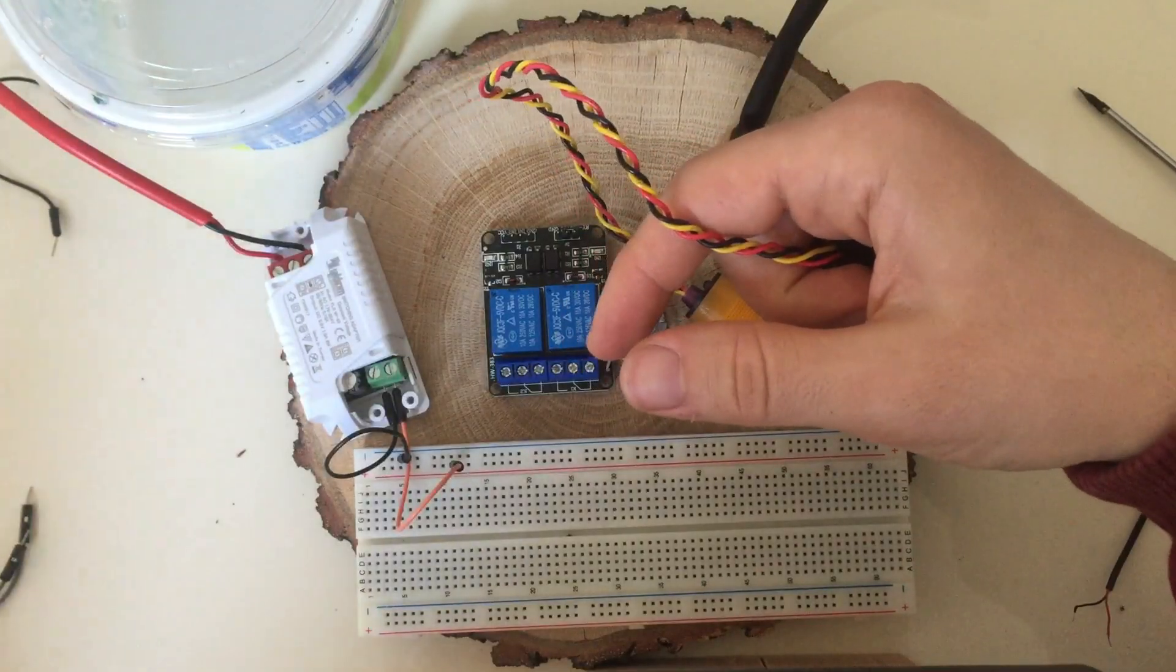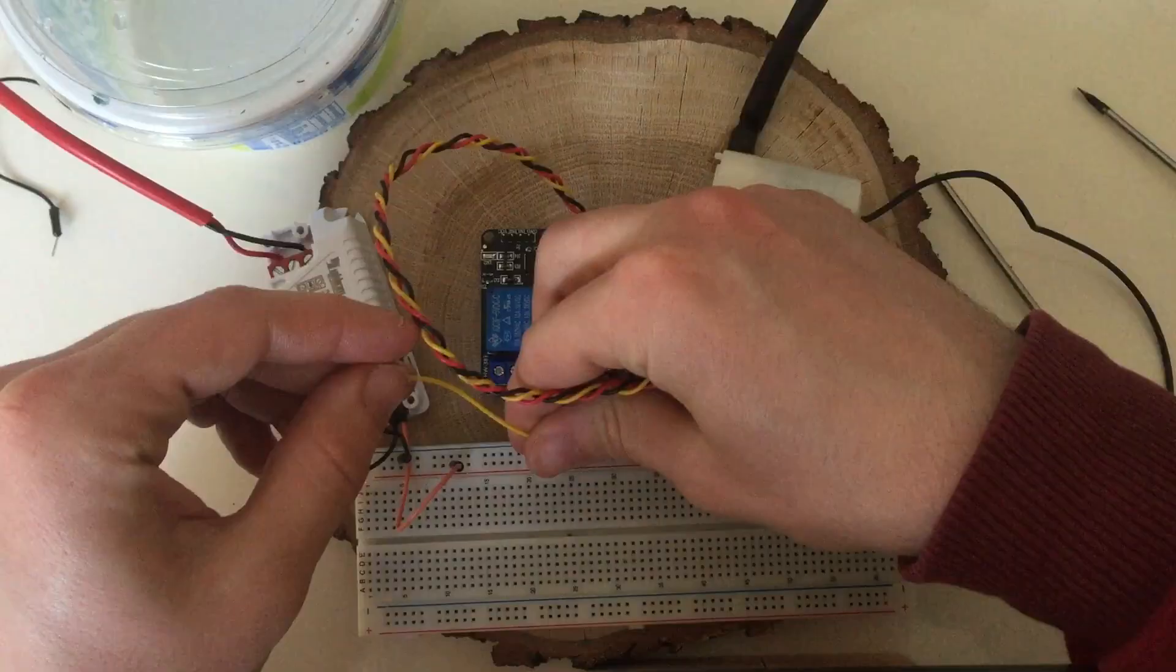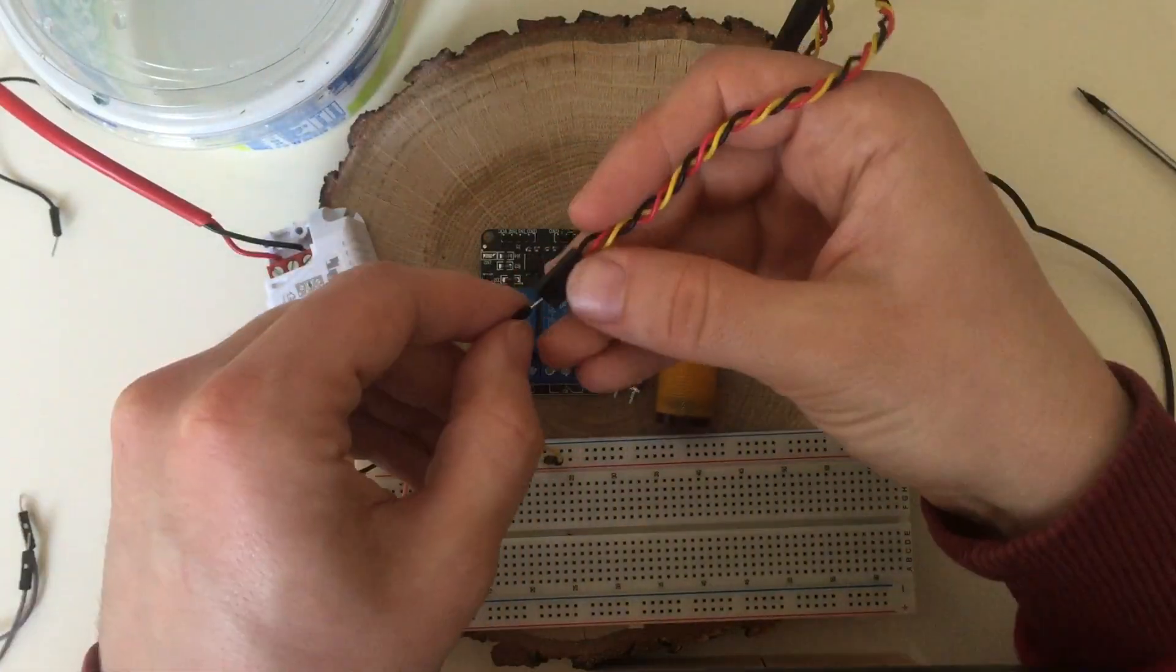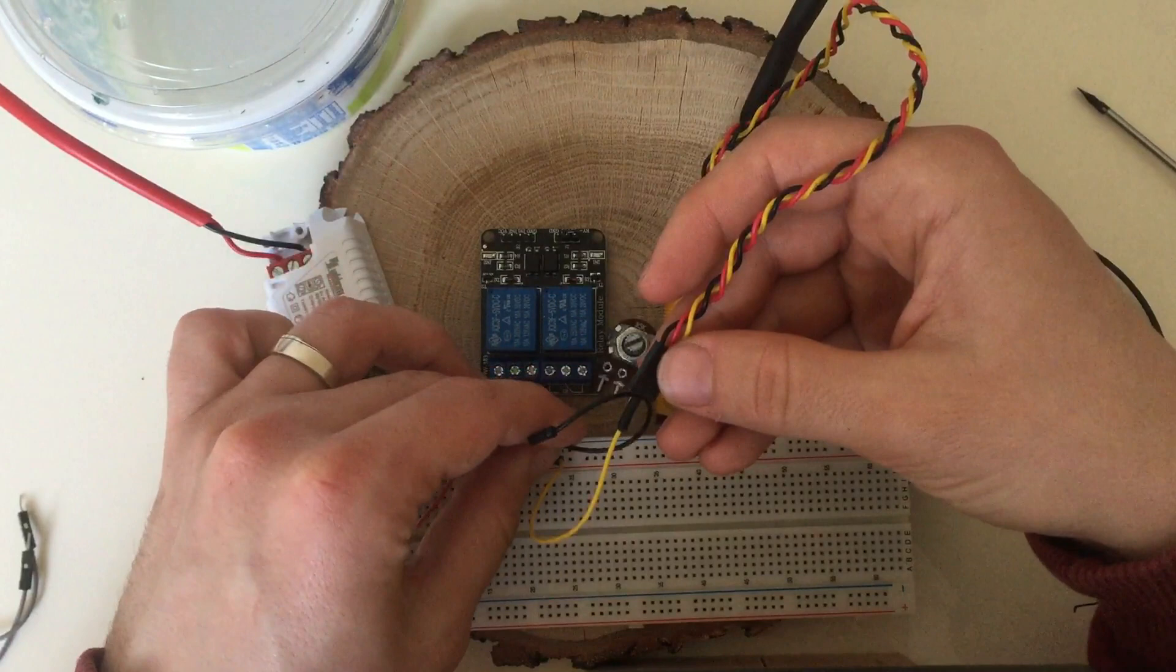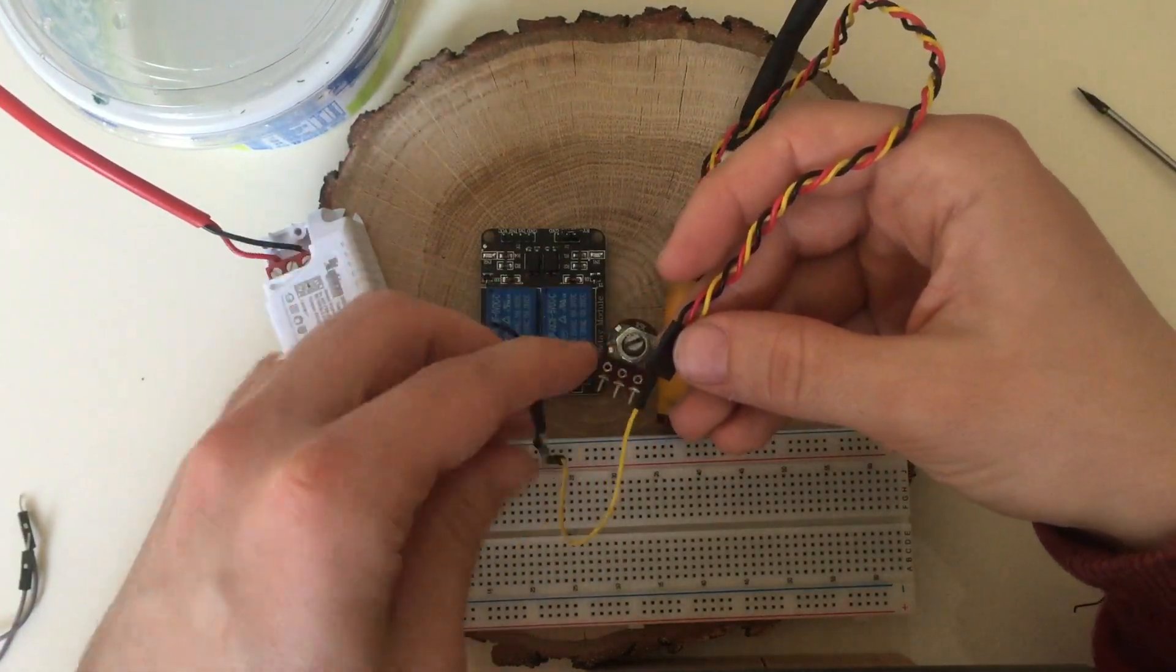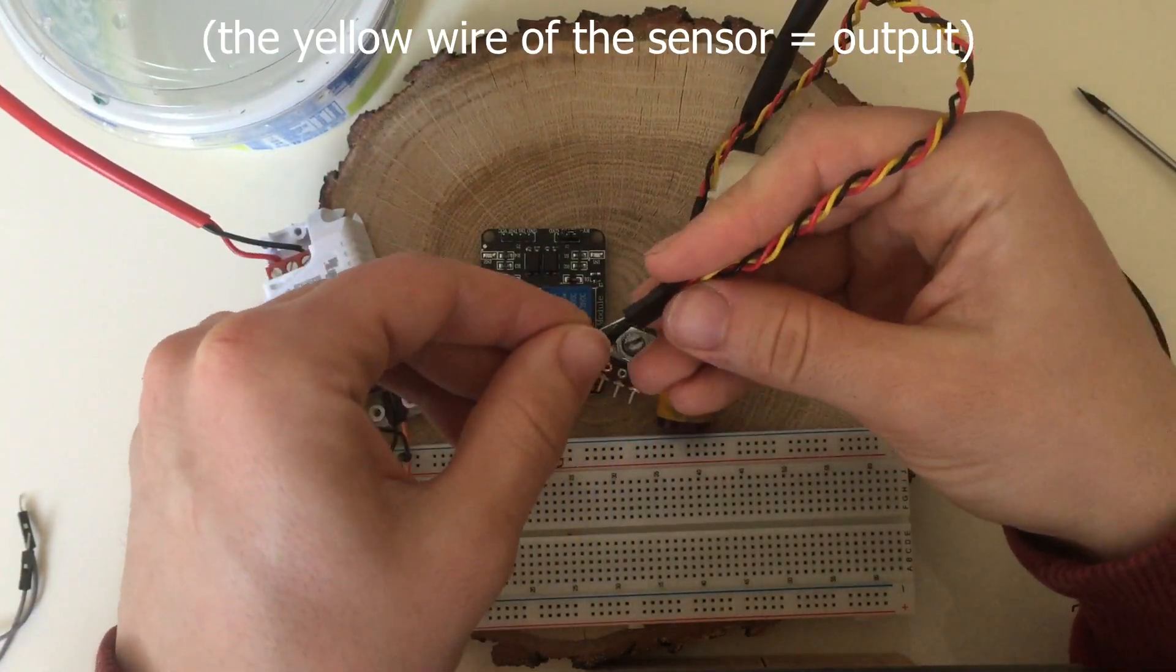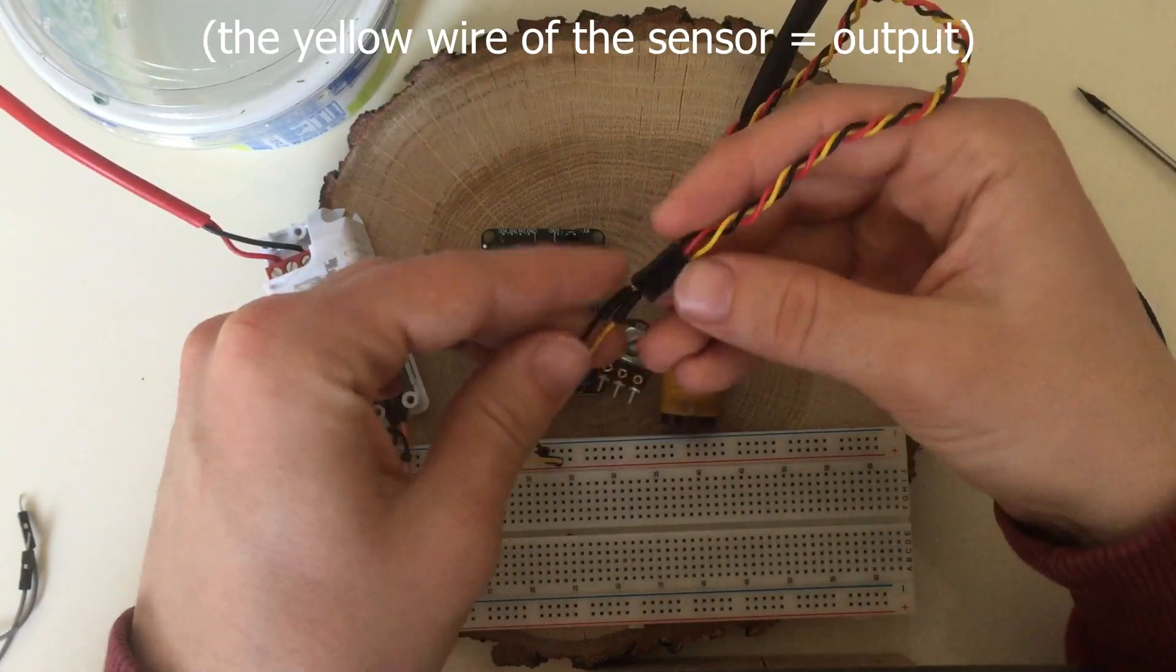Next I will connect the sensor. I connect 5V to the red wire and 0V to the negative terminal to the black wire. Yellow wire is the output of my sensor which gives output when an object is detected.